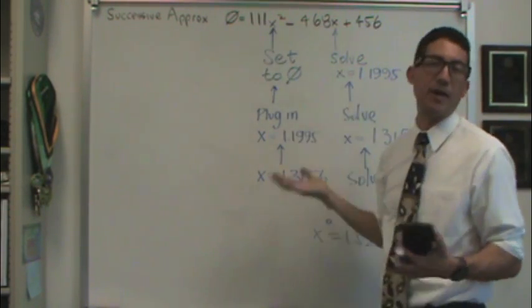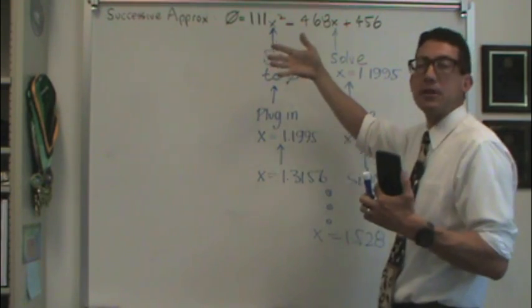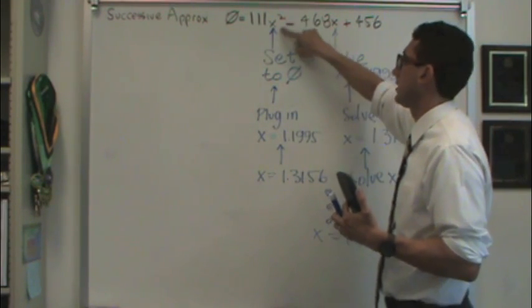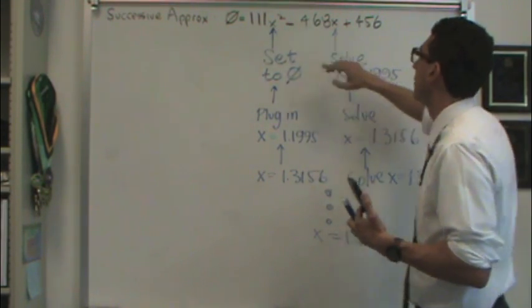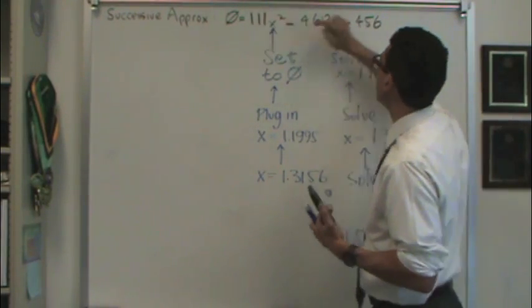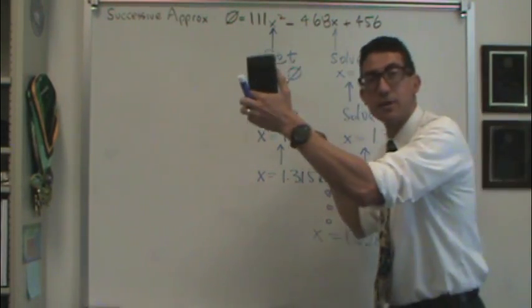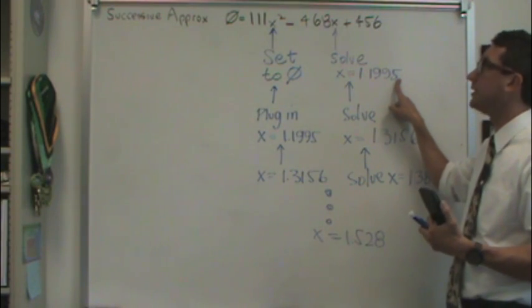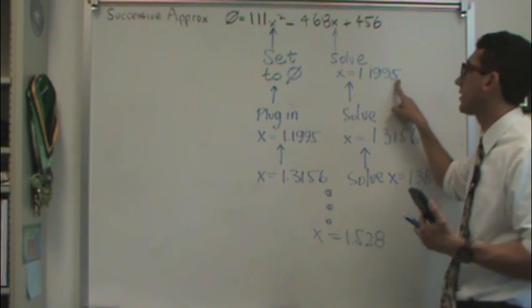Basically, you set one of the values equal to zero. And there can be a number of initial guesses, but let's say you set this equal to zero. And then, if this is gone, you solve for this x, and I did that just on my calculator right here, and this is the number I got. You can try this along with me.